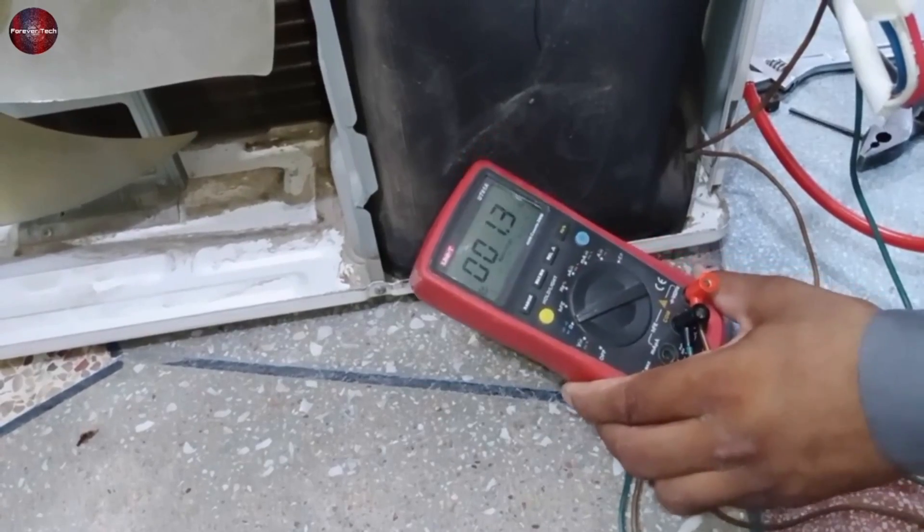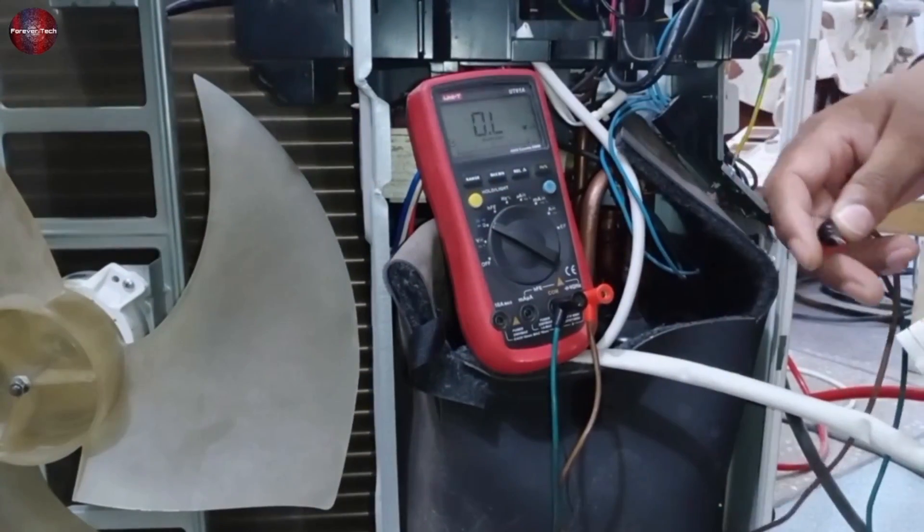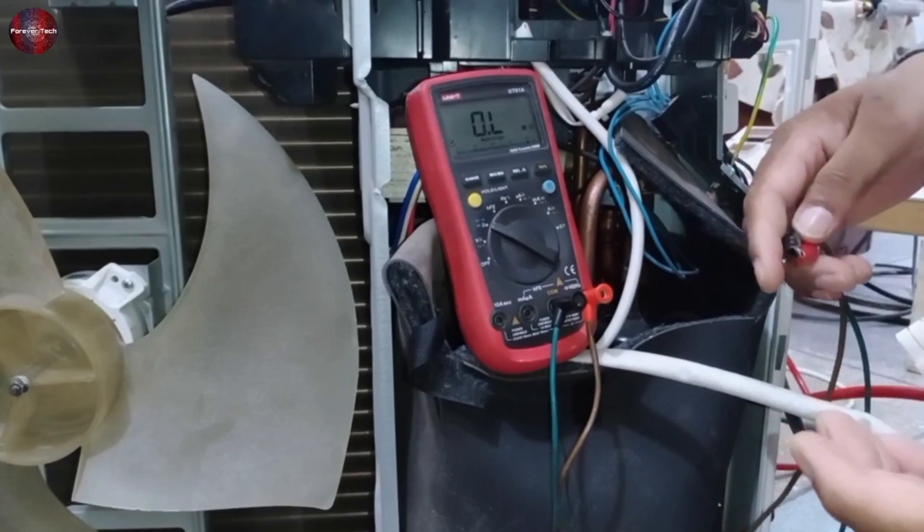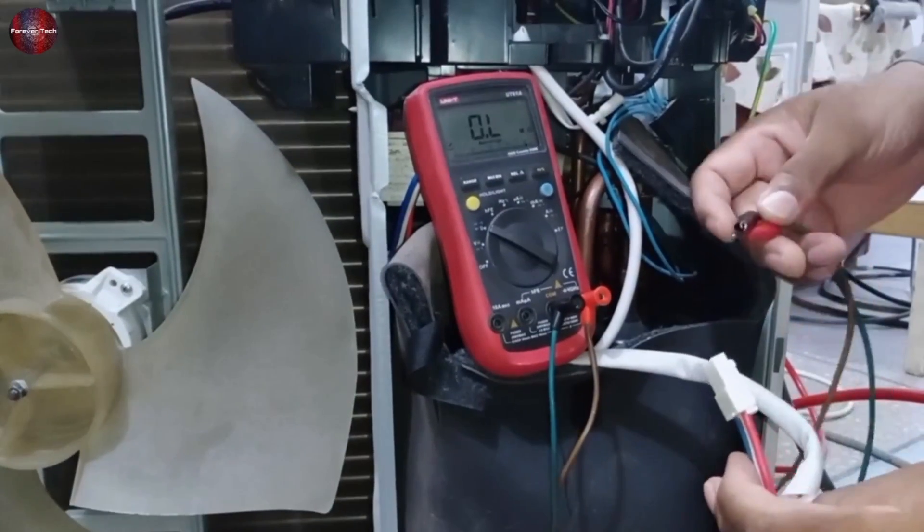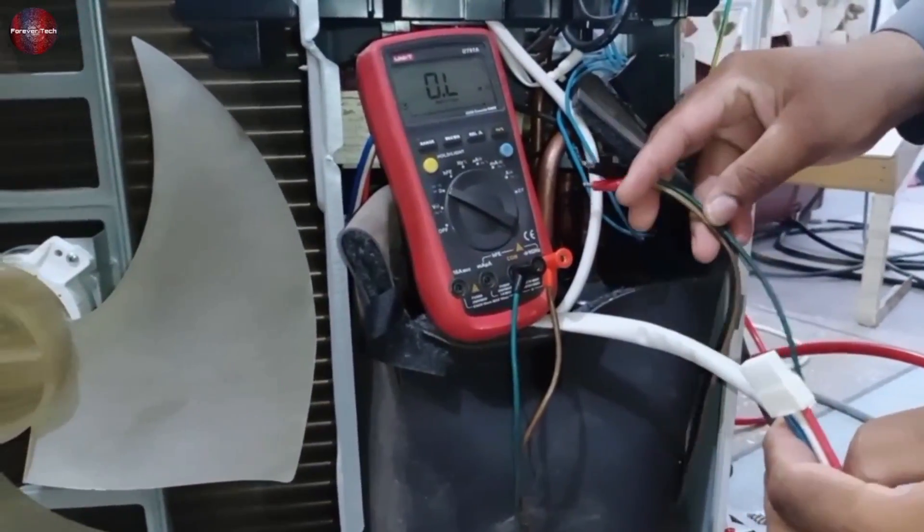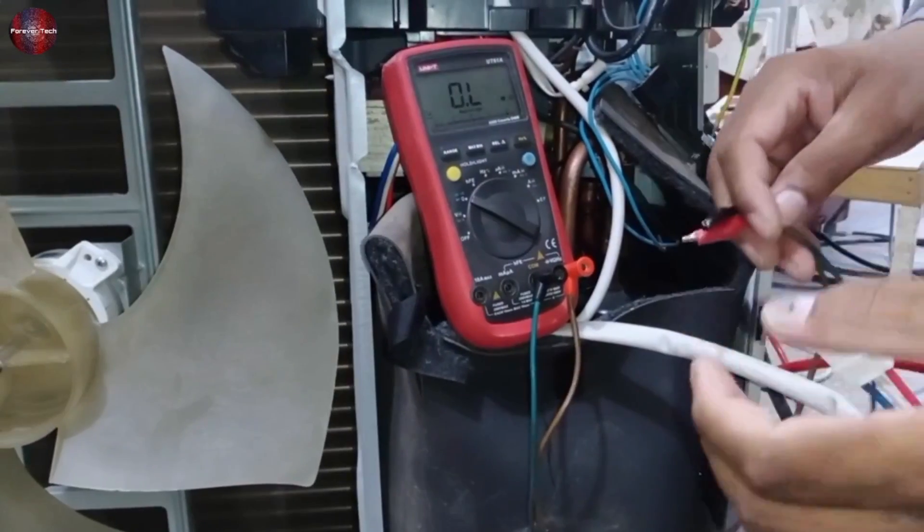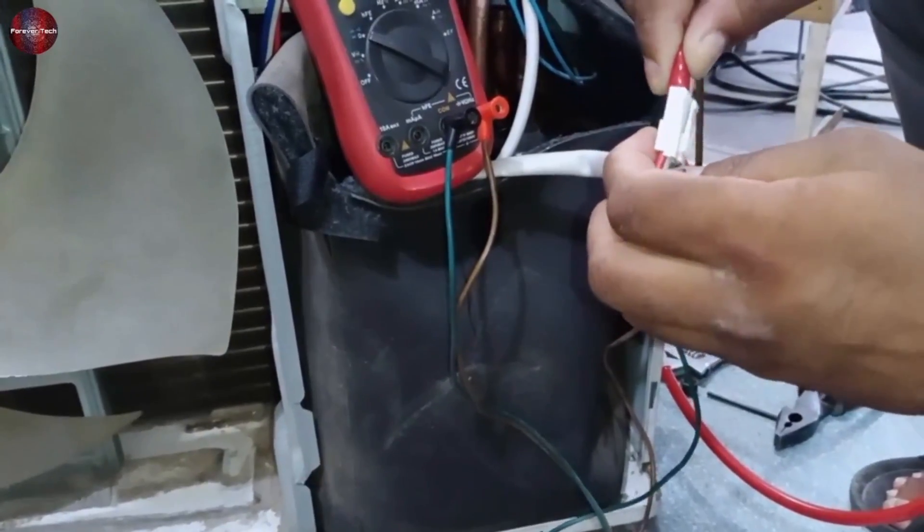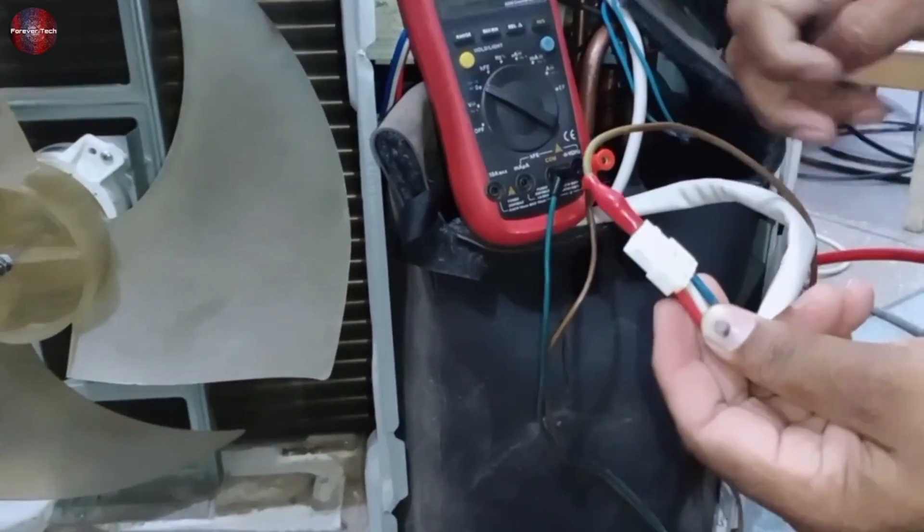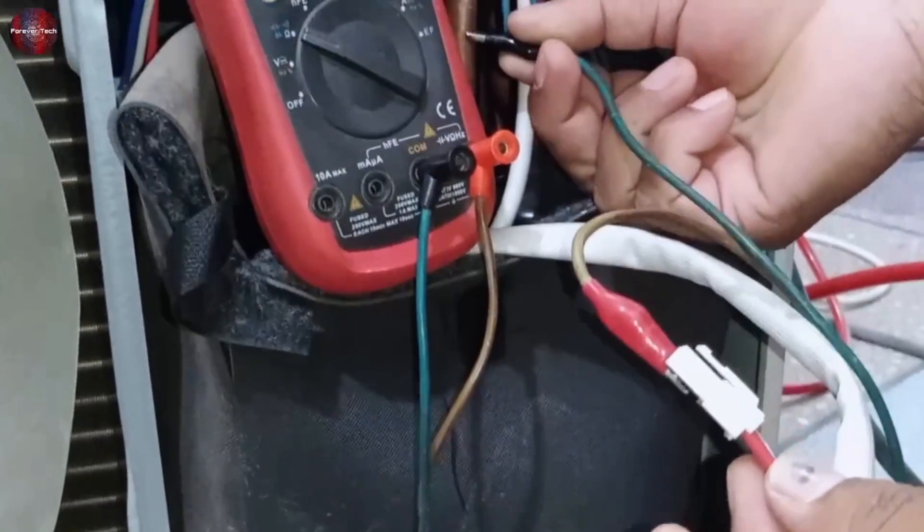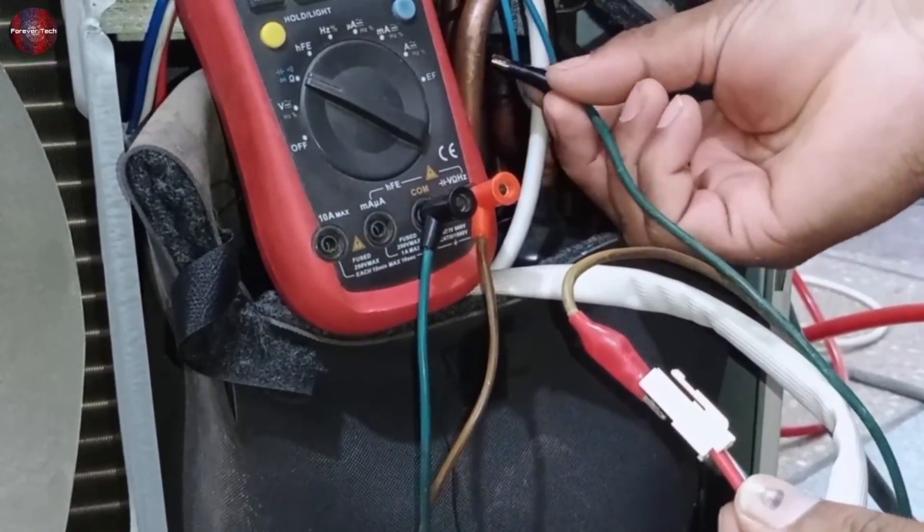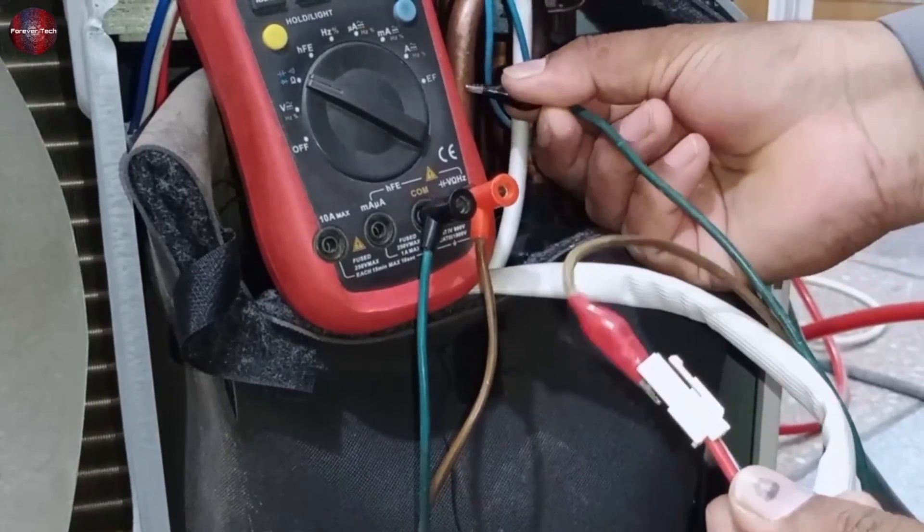Now let me tell you about the next test. The next test for the inverter compressor is significant. You have to check the compressor's leakage and whether the compressor's winding has any leakage present in it or not. You have to attach any probe of the multimeter with the compressor terminal connector and attach the second probe of the multimeter with the copper pipe, which should be welded with the compressor.